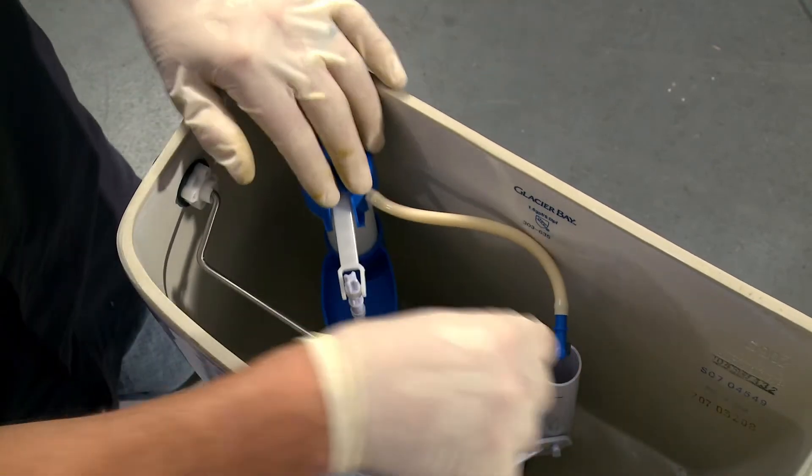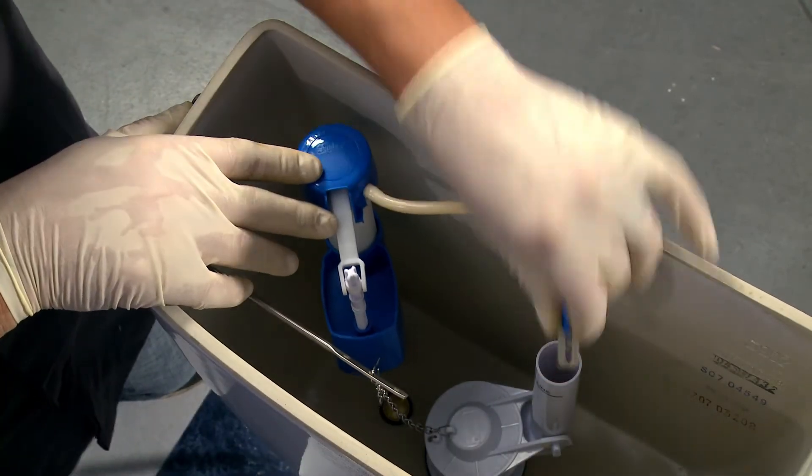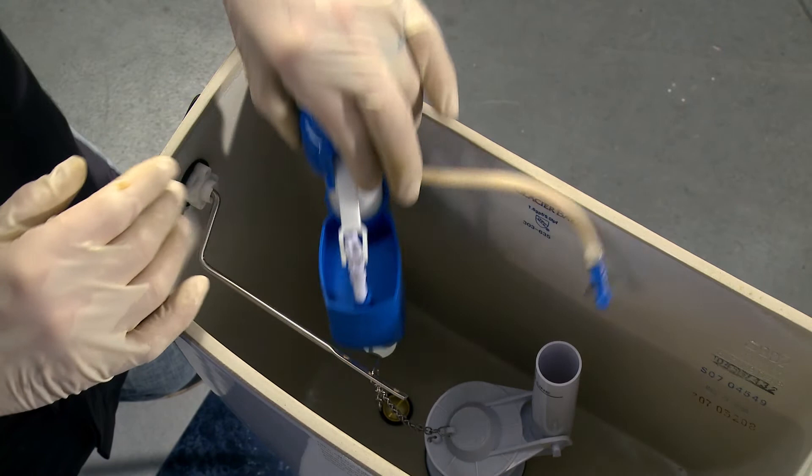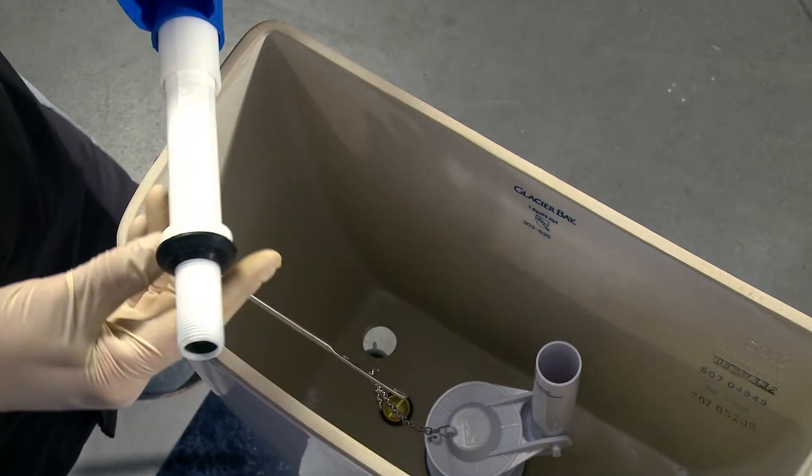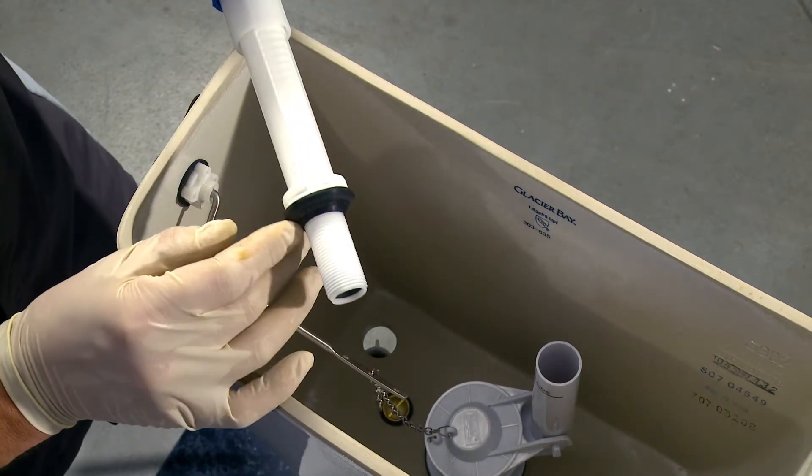There's that. We'll remove this nozzle here off of the flush valve and the old fill valve comes out. You can see it has a conical gasket at the base of it.